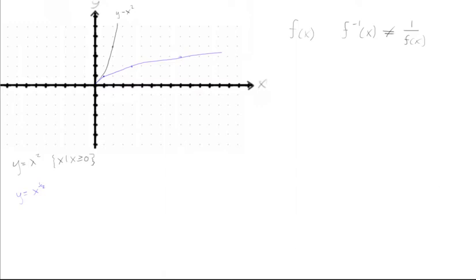Graphically, all that means is that the inverse is just a reflection of the function over the line y is equal to x. So if we draw a line here, y is equal to x, you can see all the points are just reflected over the x, or over the line y is equal to x.